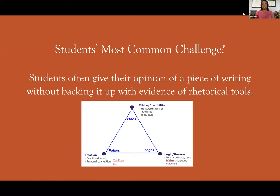So what's students' most common challenge with rhetorical analysis? A lot of times students often give their opinion of a piece of writing without backing it up with evidence of rhetorical tools. They may say the author really made me feel this way, but they don't connect that feeling to pathos. Or they may say they felt the author was trustworthy, but they don't explain what — the tone, the style of writing — is actually making them feel that way. Taking it from an opinion to backing it up with evidence using rhetorical tools like language, style, and tone makes your writing a whole lot stronger. That's my most common comment to students: take it from an opinion piece and back it up with evidence using the rhetorical triangle as your starting point.